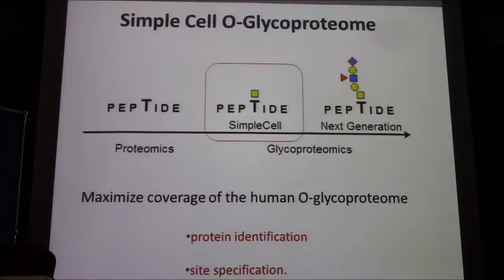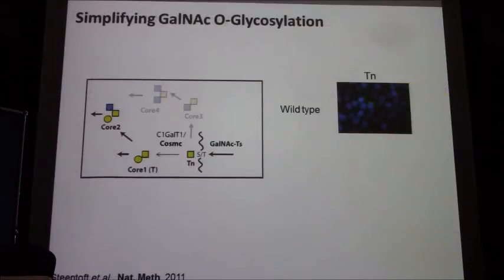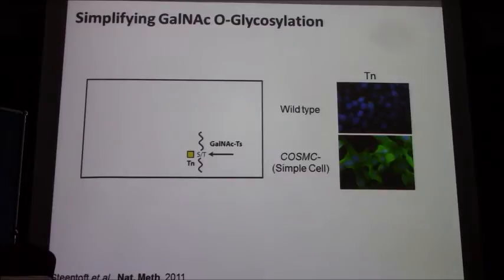This helps us reach our first initial goal: to maximize protein identification and maximize site mapping. We use DNA scissors — we started with zinc fingers and now we've moved to CRISPR. In order to prevent elongation, nature puts GalNAc-T on the peptide backbone and then elongates further. To work, the elongating enzyme needs the GalNAc substrate. So if you knock it out, the elongation enzyme will not work. Instead of this elongation, you get a short TN epitope. So instead of all this complexity, you suddenly have simplified glycosylation — we call it the Simple Cell technique.